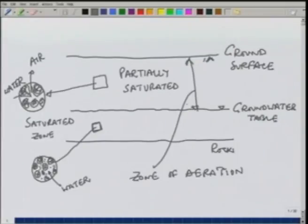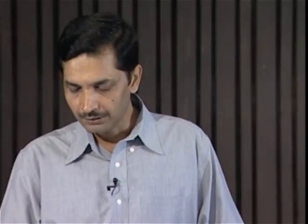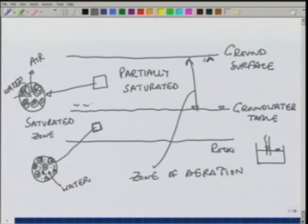In this zone we can subdivide into three parts. As we know, whenever water is in a tube it will have capillary action, because of which it will rise within the tube. This phenomenon is known as capillary rise and occurs because of surface tension. The same thing happens below the ground level also. So in this partially saturated zone, there is a thin layer known as the capillary fringe.